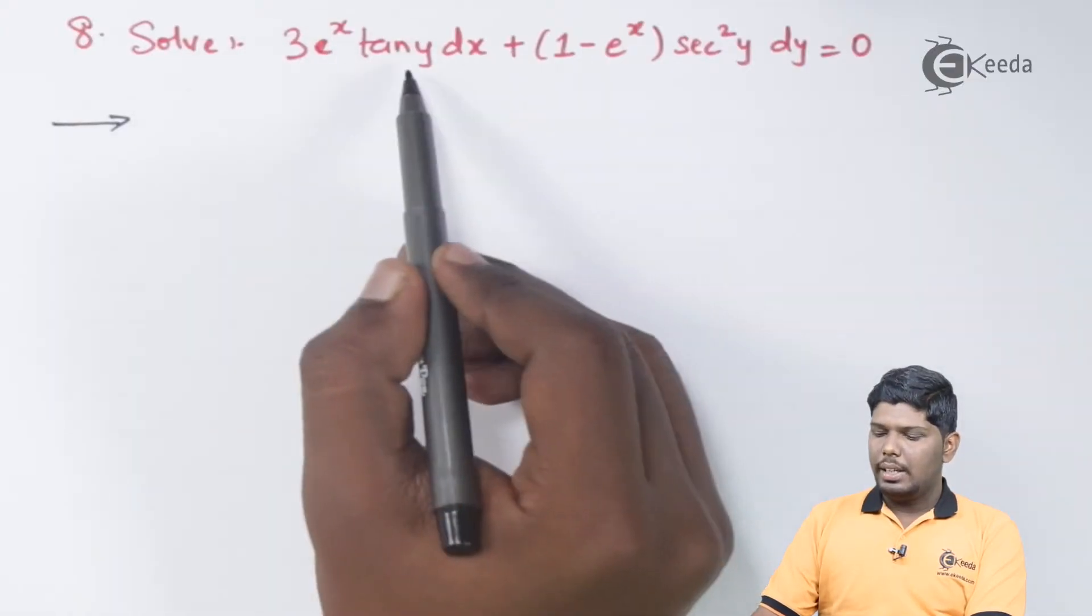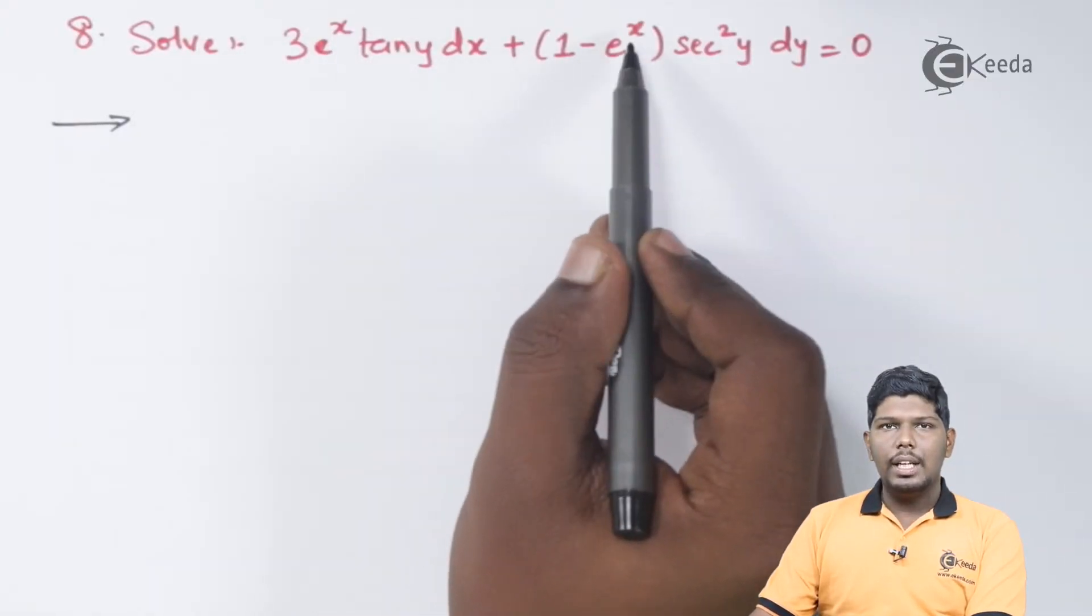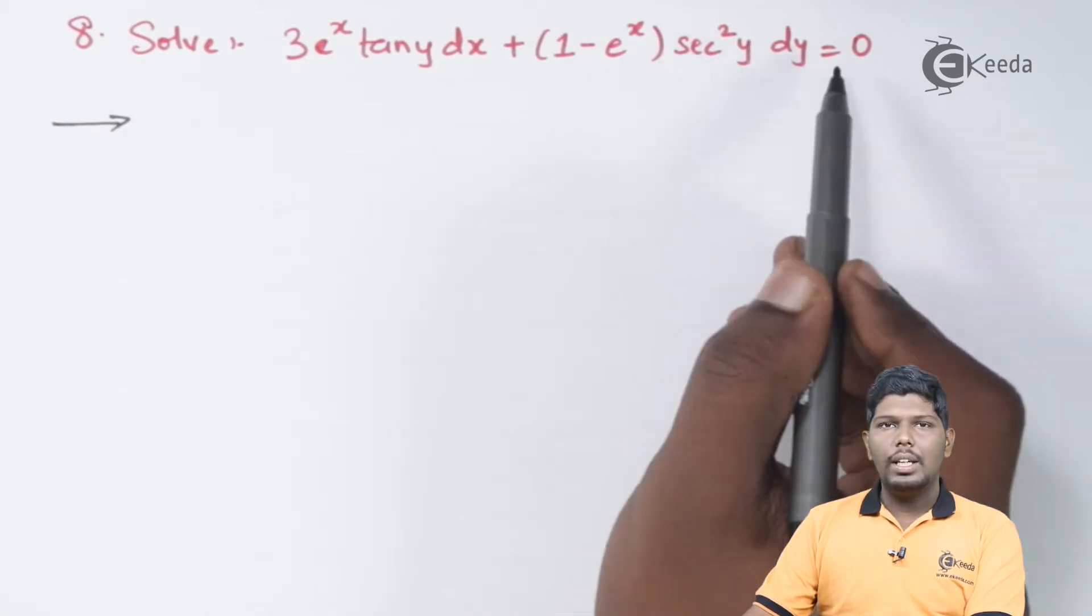3 e raise to x tan y dx plus 1 minus e raise to x sec square y dy is equal to 0.